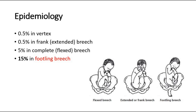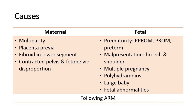The causes of cord prolapse can be divided into maternal or fetal causes. Maternal causes include multiparity, placenta previa, fibroid in the lower segment of the uterus, or contracted pelvis and feto-pelvic disproportion.